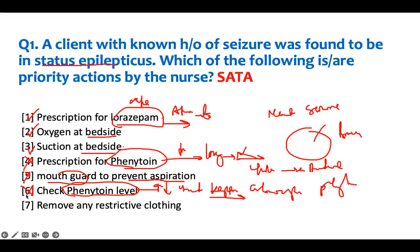Remove any restrictive clothing — yes. You want to prevent anything that will restrict them or cause any injury. This is a safety issue. Remove any restrictive clothing. You do not restrain them — don't tie them down. That is why you remove any restrictive clothing on their body to allow them to seize safely.